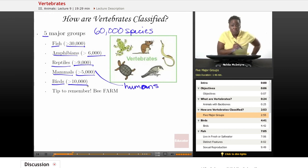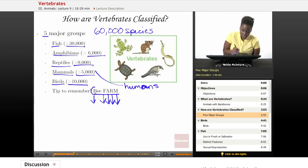So one way to remember the five major group names is something that I just made up called Bee Farm, and Bee Farm is just going to be a way to remember the names.